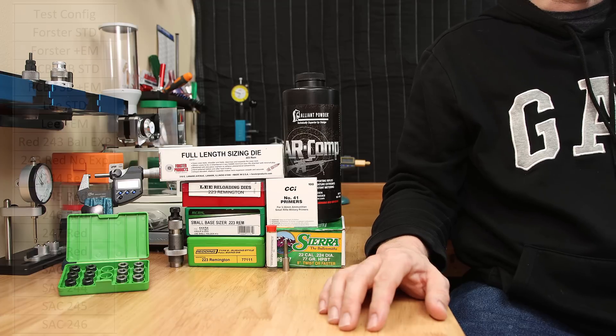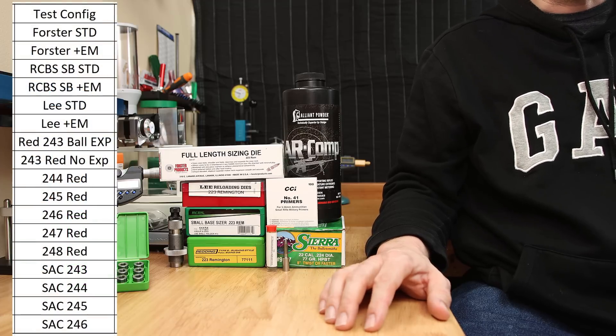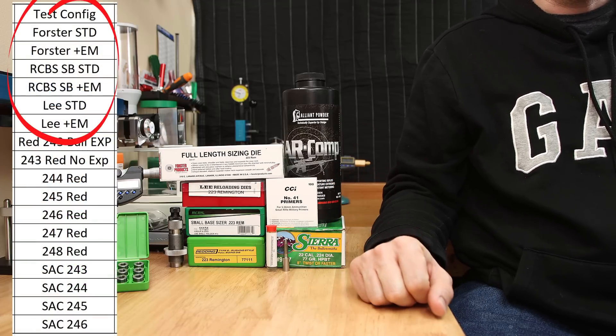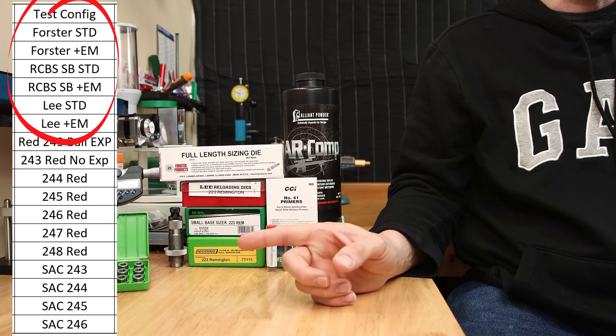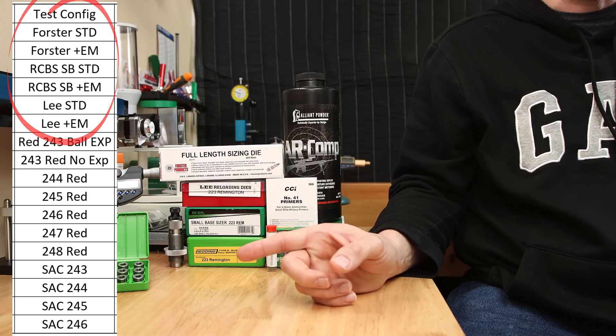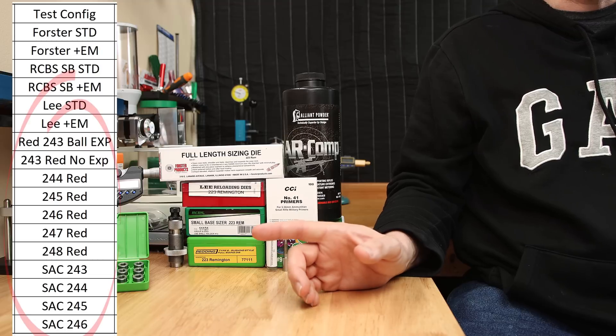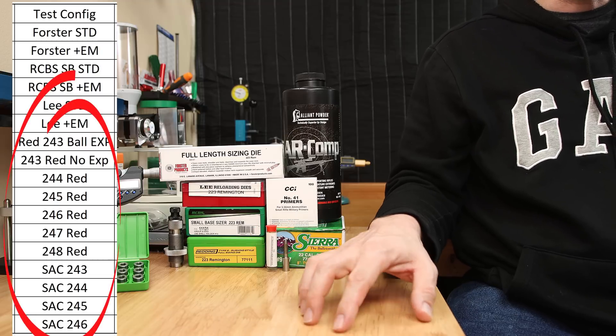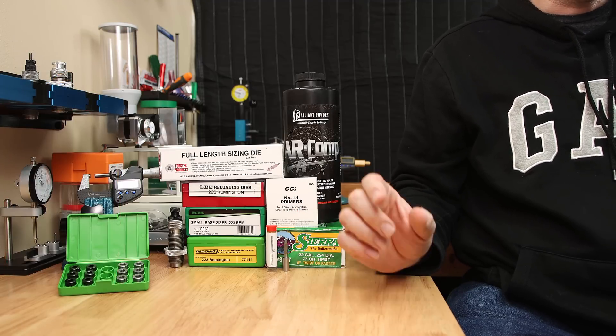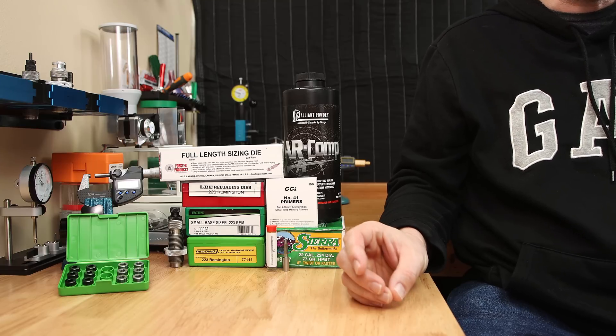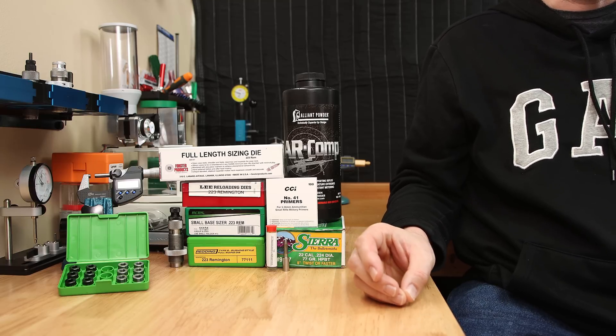So today we went full ridiculous and tested 17 total configurations. Three factory dies in their standard configuration. Those same three dies, removing the stock expander mandrel, and then using the .222 expander mandrel from Sinclair. Our other options, we took a Redding .223S die and tried 11 different configurations with it. If it's not apparent, we're trying to cast a wide net, and then maybe narrow it down a little bit to test less configurations and more samples at those configurations.